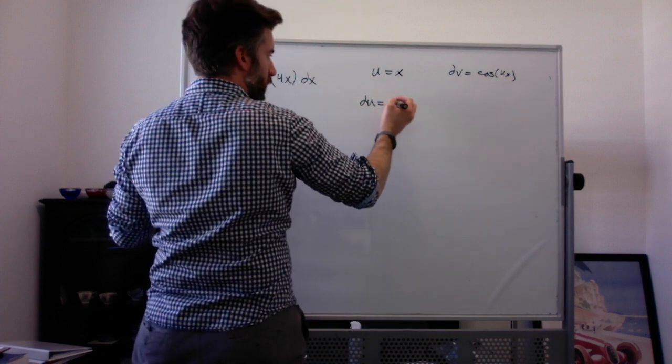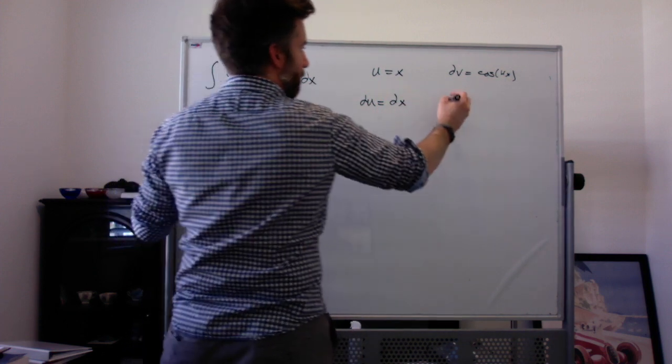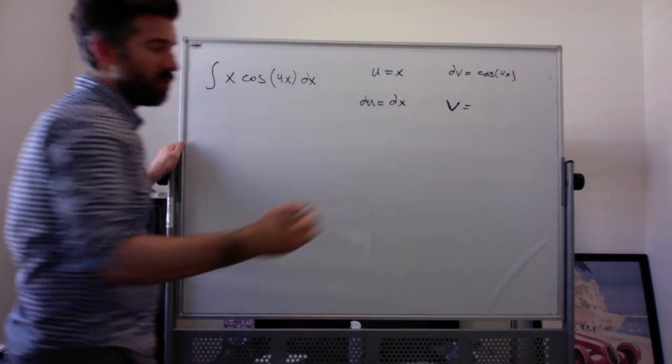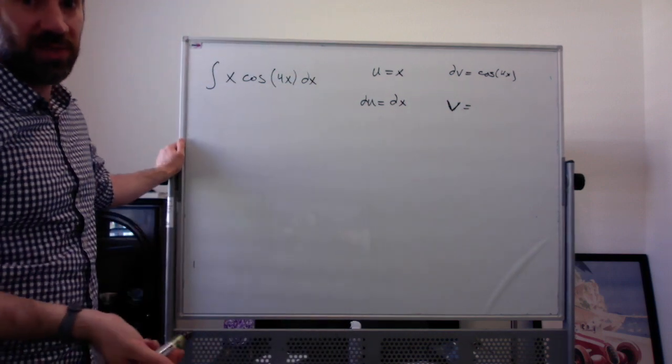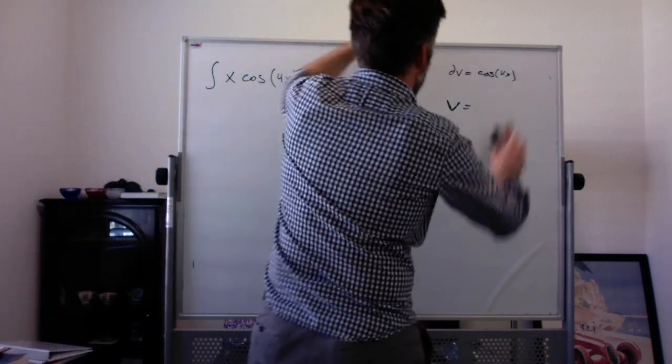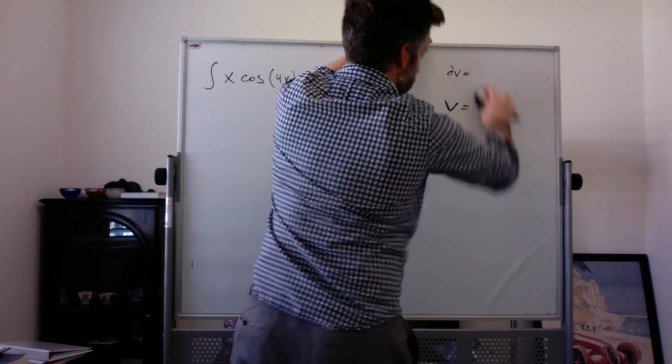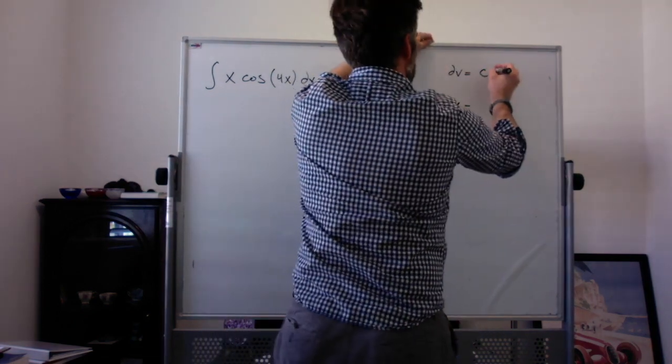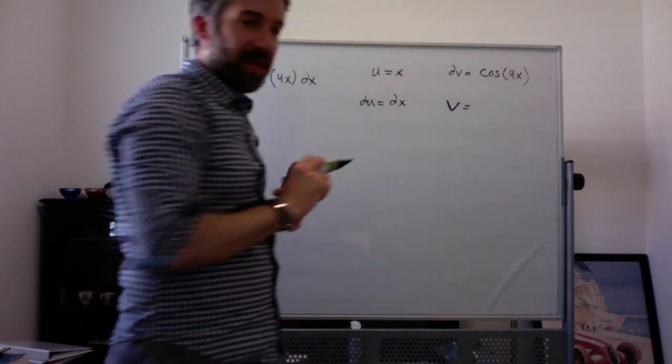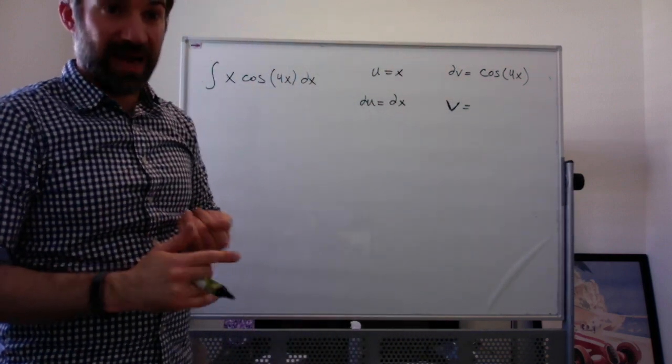du is still 1 times dx or just dx. And v, so this is where you would maybe have to use a u sub, but I don't want you to have to use a u sub. So the whole thing here is that, since the derivative of cosine of 4x, the chain rule makes you multiply by 4, the anti-derivative has to make you divide by 4.